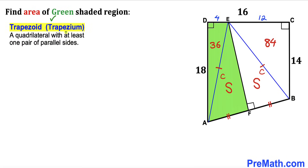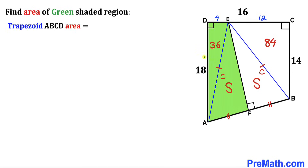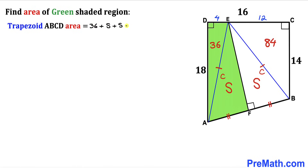Recalling the definition of a trapezoid — sometimes called a trapezium — a quadrilateral with at least one pair of parallel sides, we confirm that ABCD is indeed a trapezoid. The total area of trapezoid ABCD equals the sum of its parts: 36 + S + S + 84, which simplifies to 120 + 2S.